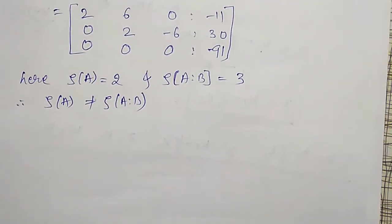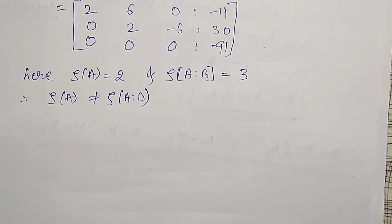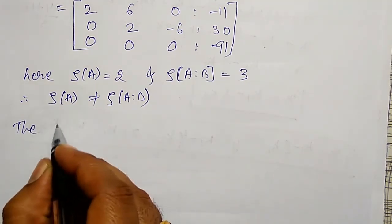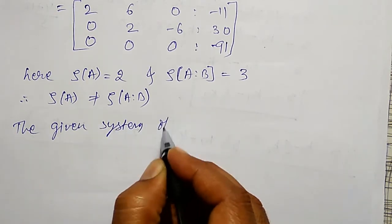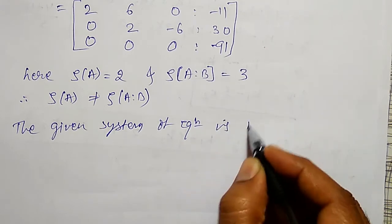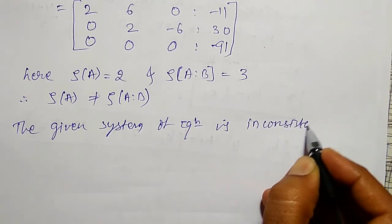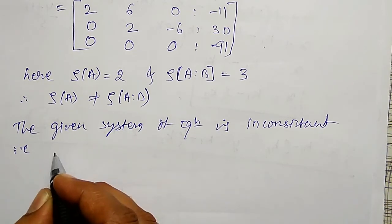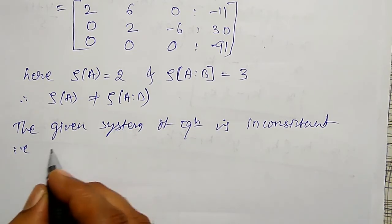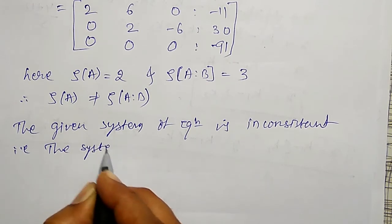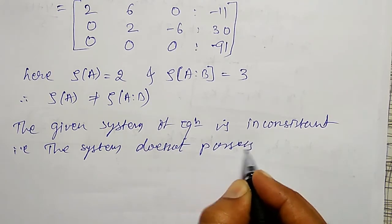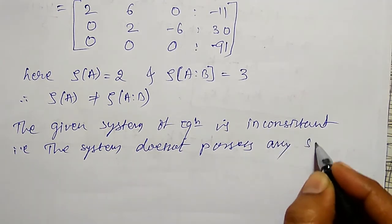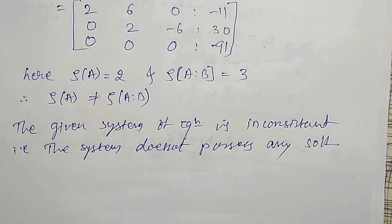Here rank of A is not equal to rank of augmented matrix. If both ranks are not equal, then what you can tell here? The given system of equations is inconsistent. That is, the system does not possess any solutions. Therefore what I can say, the system is inconsistent, does not have any solutions.